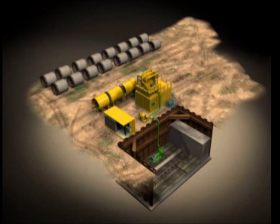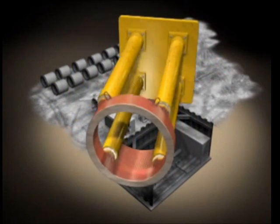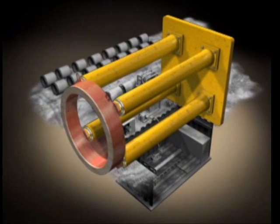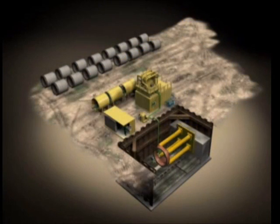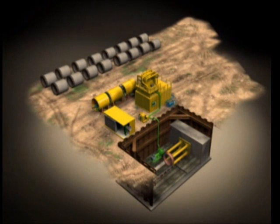The hydraulically powered main jacking station is installed in the start shaft. The thrust ring ensures that there is an even transfer of force from the four hydraulic cylinders. A concrete block cast in the rear of the start shaft absorbs the forces created by the thrust cylinders.